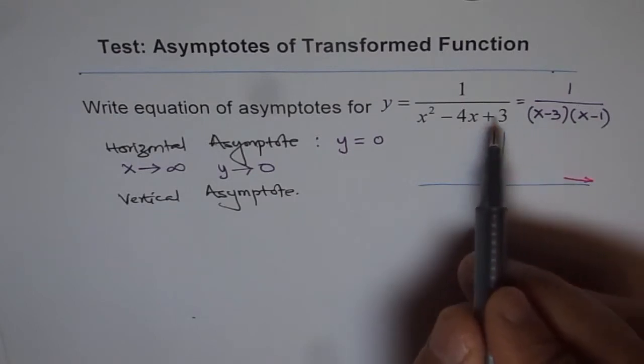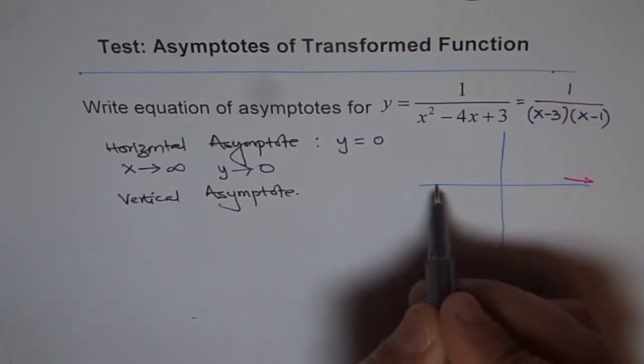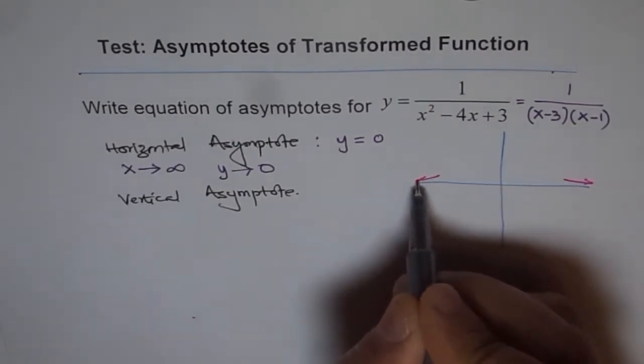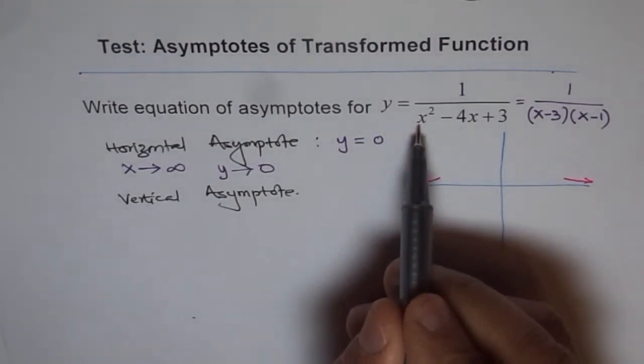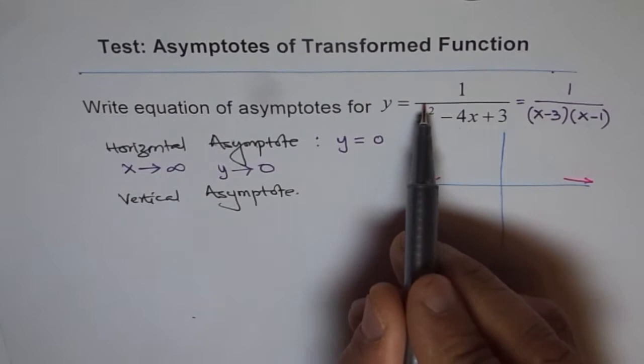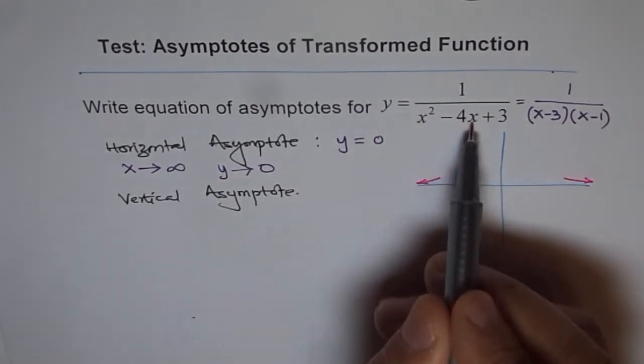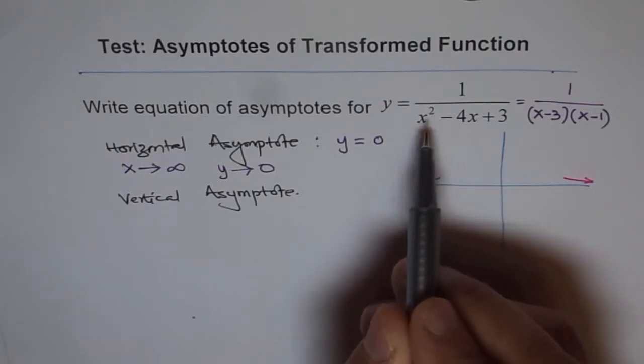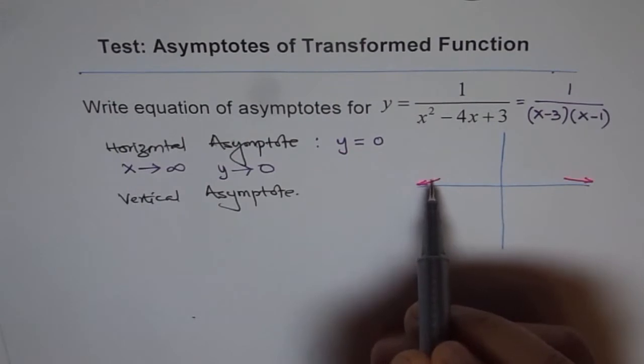The function approaches 1 over a large value, which is 0. Since it's positive, it approaches from the positive side. If I write minus 1000 in the original form, x squared will be positive and much higher than 4 times x, so overall it's positive and approaches from the positive side.